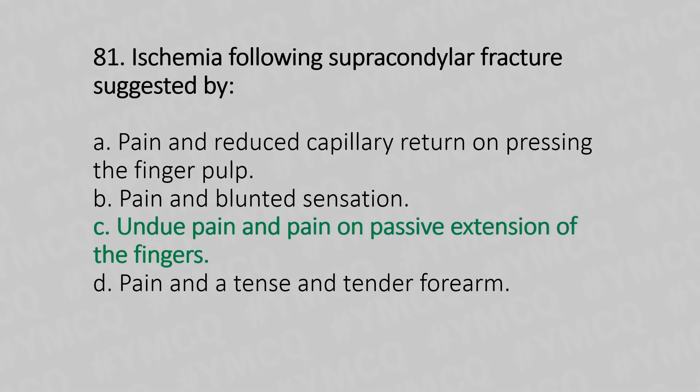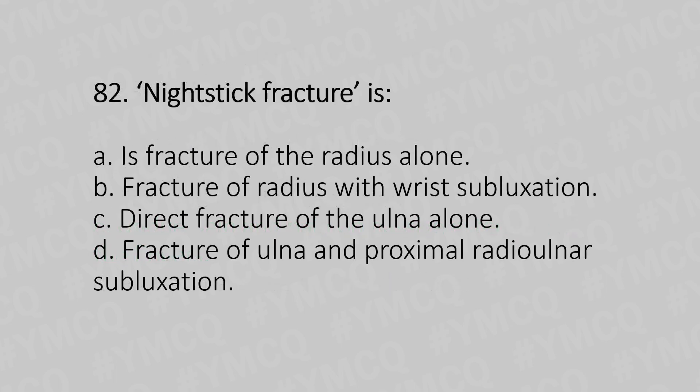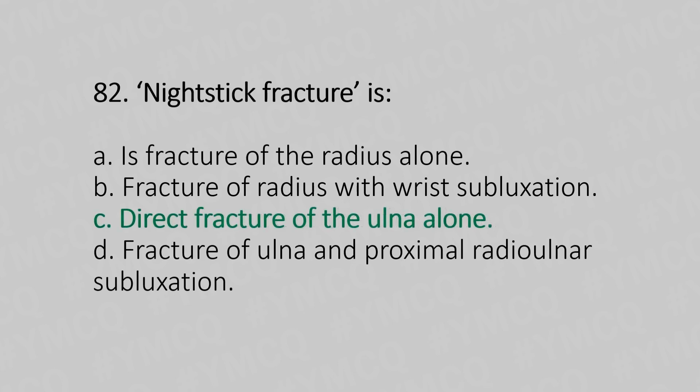Let's move to question number 82. Nightstick fracture is: Option A, isolated fracture of the radius alone. Option B, fracture of radius with wrist subluxation. Option C, direct fracture of the ulna alone. Option D, fracture of the ulna with proximal radio-ulna subluxation. The answer is Option C, direct fracture of the ulna alone.